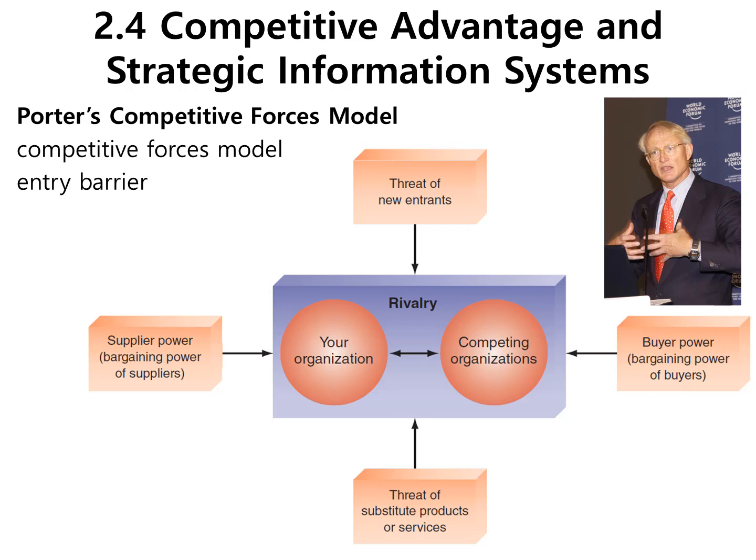Another force is supplier power. Suppliers, when they're really big and we really depend on them, can exert great pressure on us and reduce our profitability. Then there is buyer power — our customers. For example, if we sell 90% of our product to Walmart and they retail it later, then Walmart becomes really important to us and very powerful over us. They can lower the prices and squeeze us, making life more difficult.